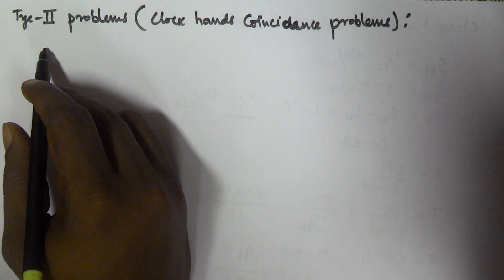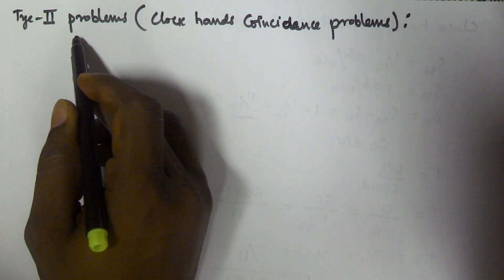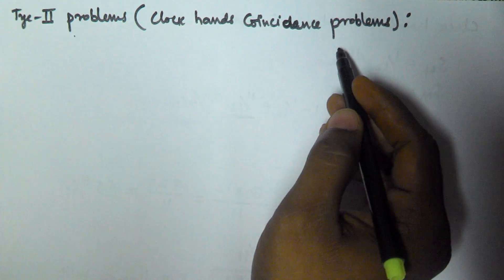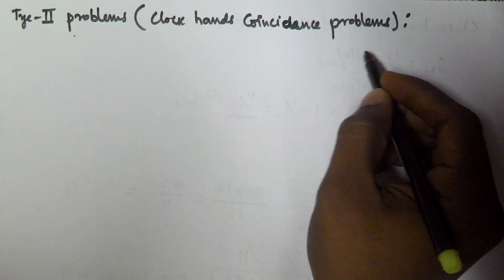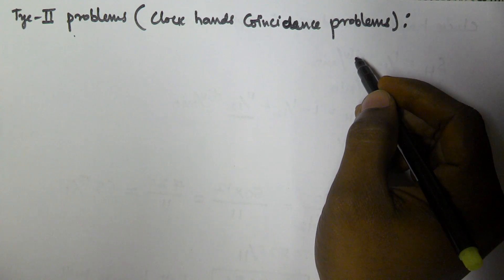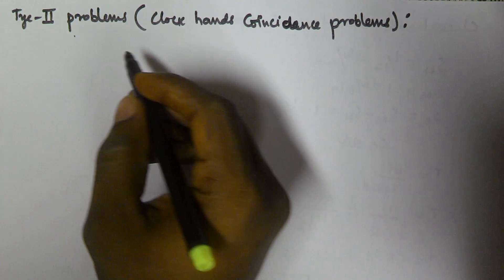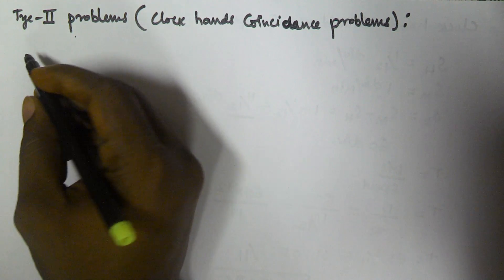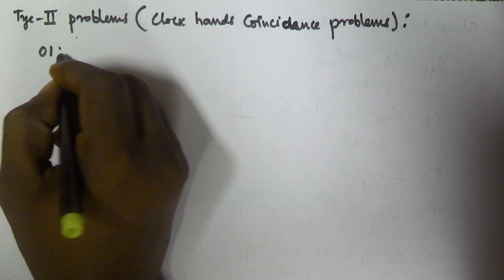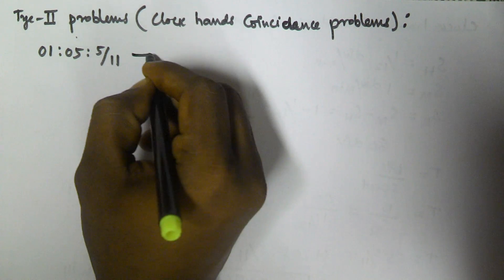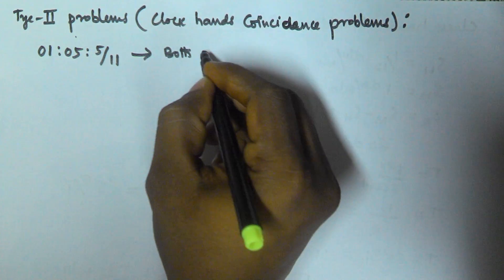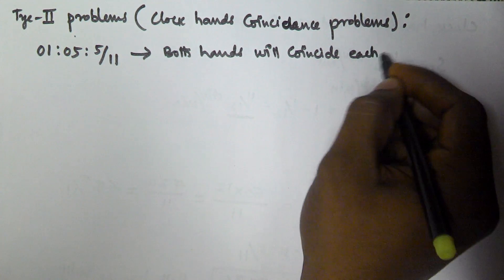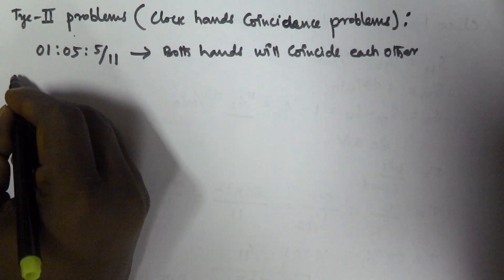In this video we will see how to solve Type 2 problems of a clock. Type 2 problems are based on clock hands coinciding. In the previous video we saw Type 1 problems where the time is given and we find the angle between two hands. For Type 2, after every 1 hour 5 minutes and 5/11 seconds, both hands will coincide each other.